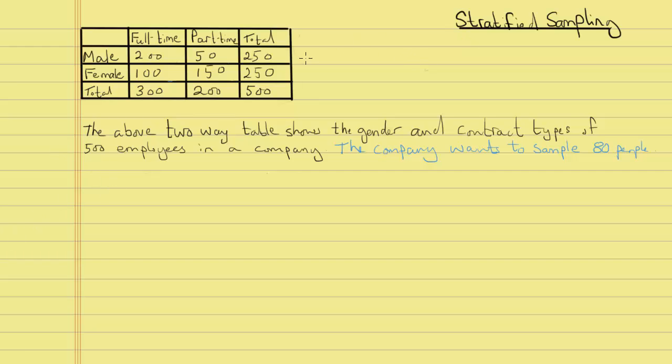In this video I'll be going through stratified sampling. Let's have a look at this example. The two-way table shows the gender and contract types of 500 people in a company. The company wants to sample 80 people.